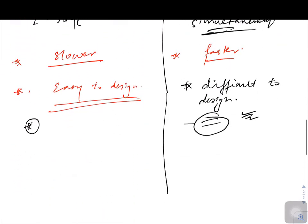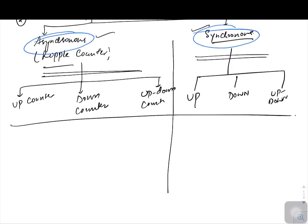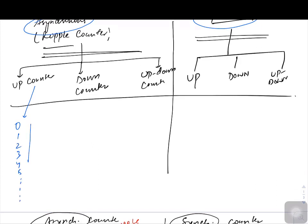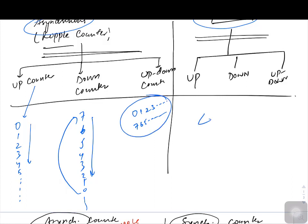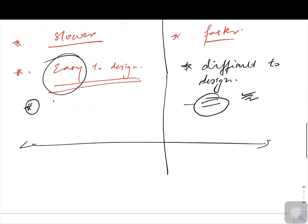The other types possible in both asynchronous and synchronous are up counter, down counter, and up-down counter. An up counter means whenever your counter is counting, it counts in increasing order. A down counter counts like: 7, 6, 5, 4, 3, 2, 1, 0, and so on. If it is an up-down counter, it is a single circuit design that counts either in increasing or decreasing order, and the same is applicable for synchronous counters.